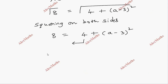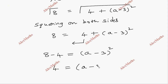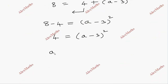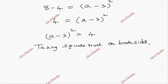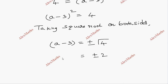By subtraction, 8 minus 4 gives us (a minus 3) whole square. So 4 equals (a minus 3) whole square. Taking square root on both sides, a minus 3 equals plus or minus root 4, which is plus or minus 2. So a minus 3 equals plus 2, and a minus 3 equals minus 2.